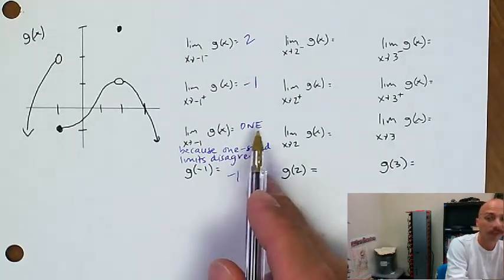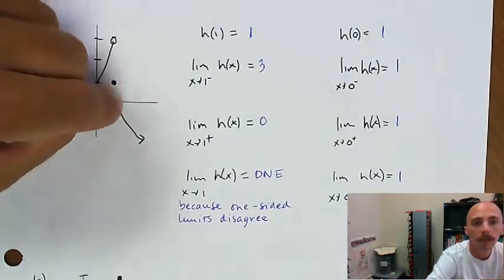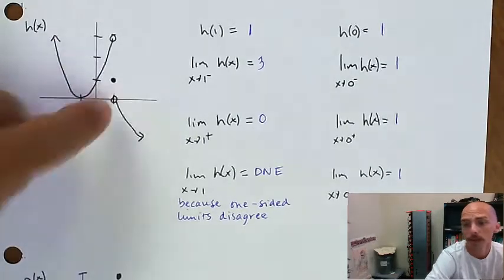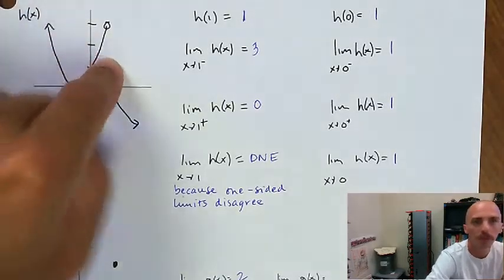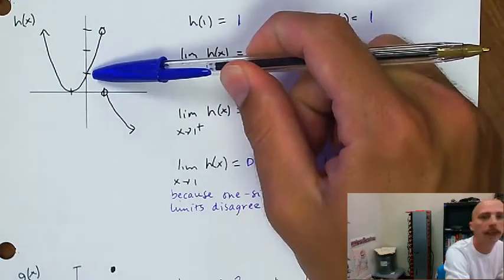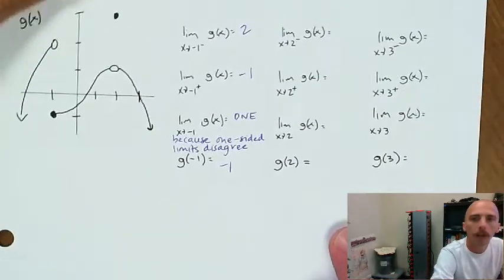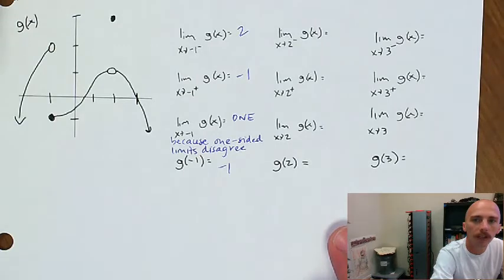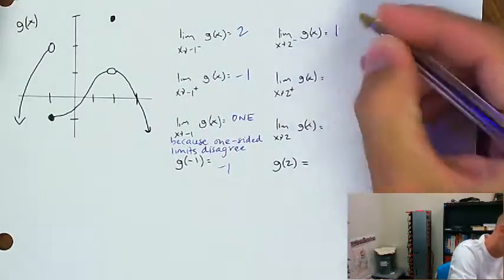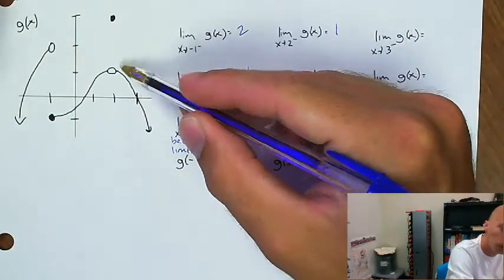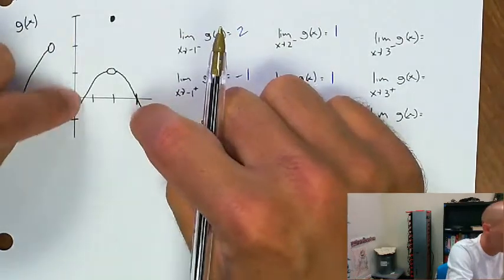We actually saw that with h: the limit as x approached 1 of h didn't exist, but h of 1 did exist. The limit as x approaches 2 from the negative side of g of x is 1. Approaching 2 from the positive side is also 1, meaning the limit as x approaches 2 of g of x equals 1, because from both sides we're approaching the same value.